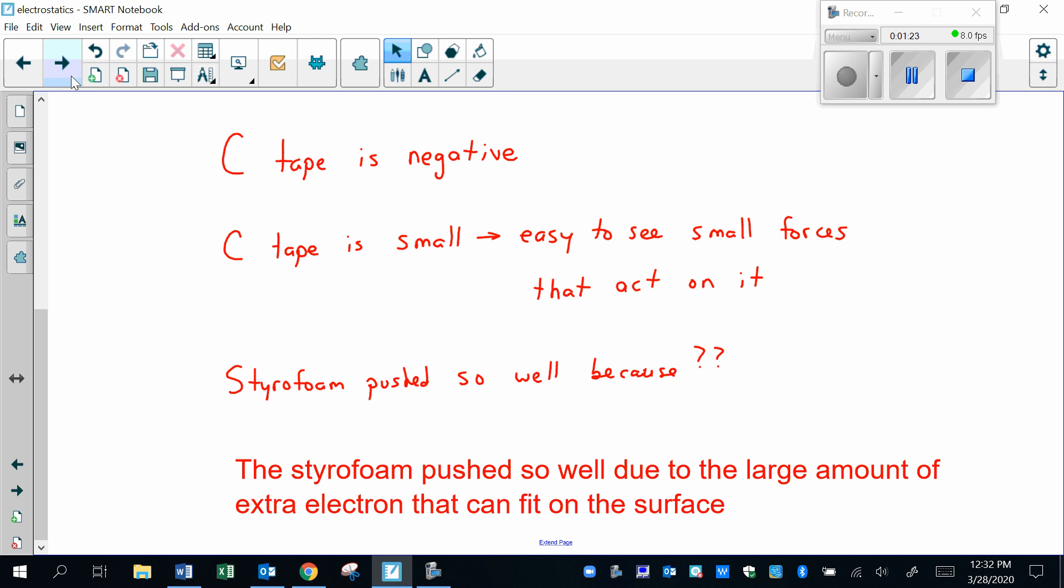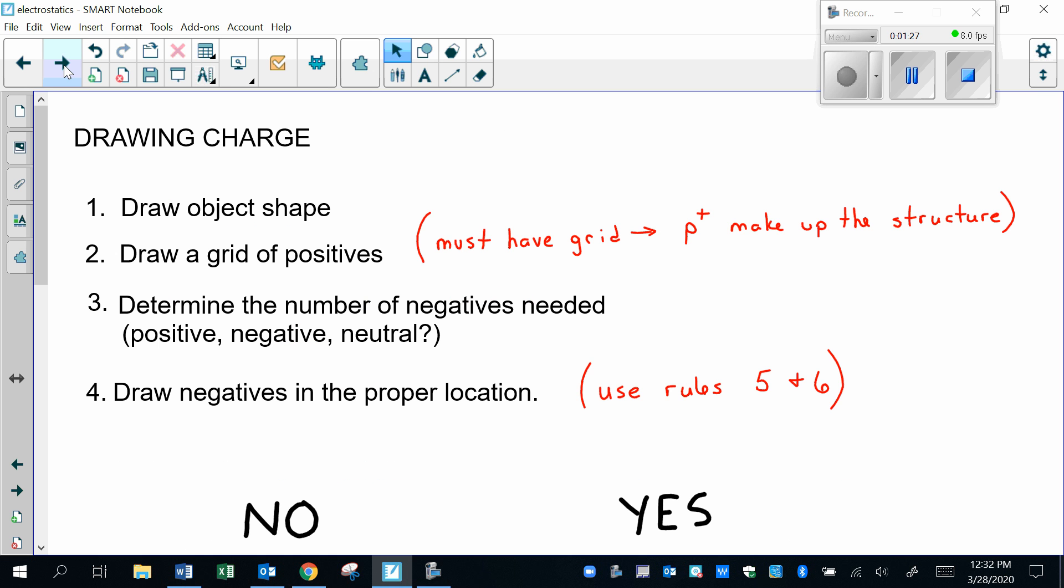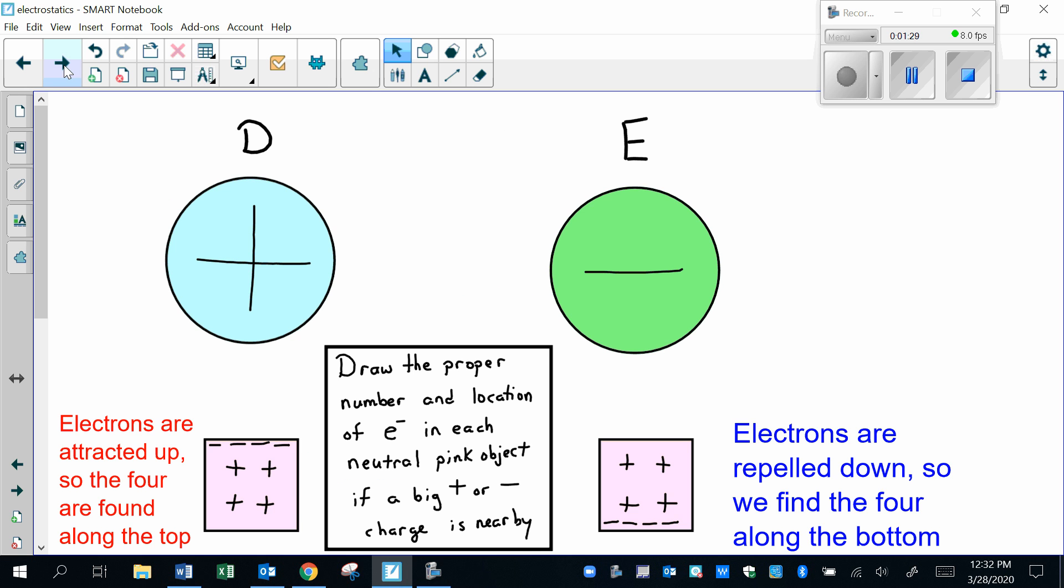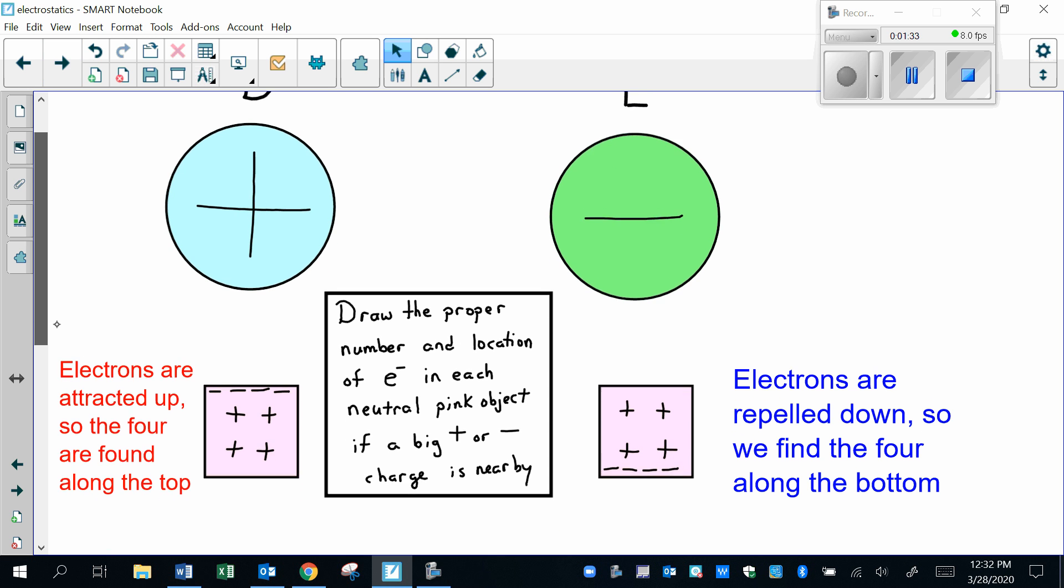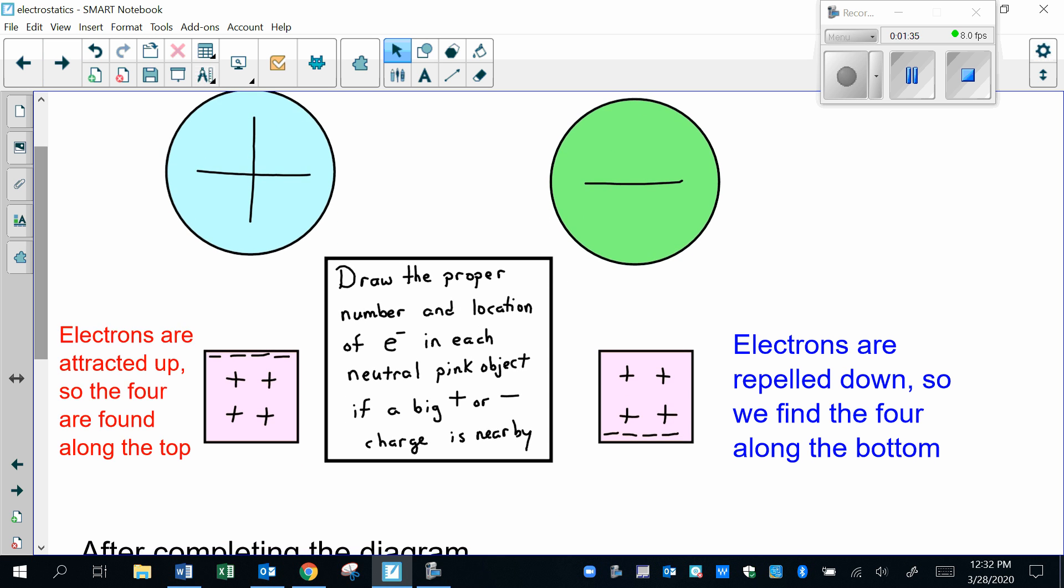The next question involved slide number seven, where we had two large charged objects: the blue positive D tape on the left-hand side or the green negative C tape. You were asked to draw the proper location and the proper number.